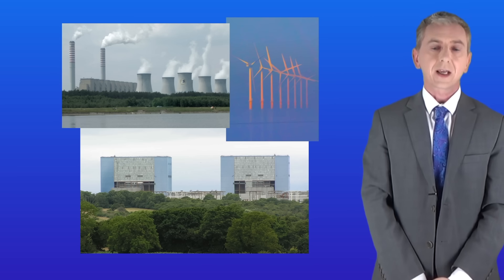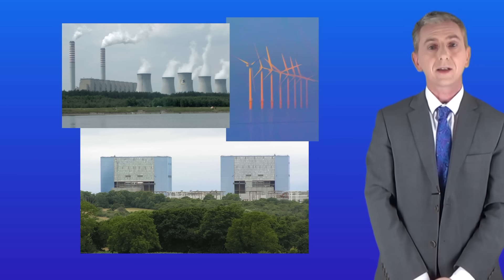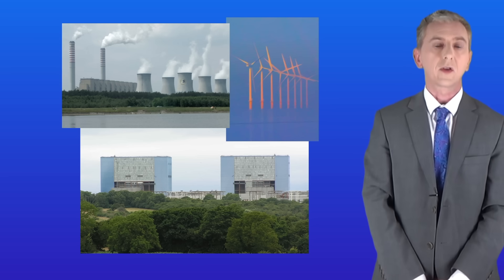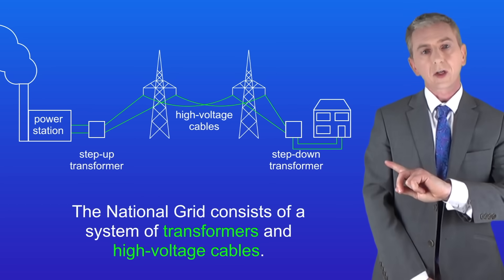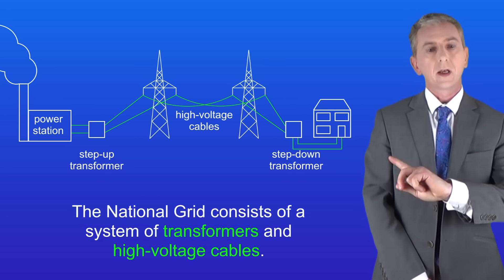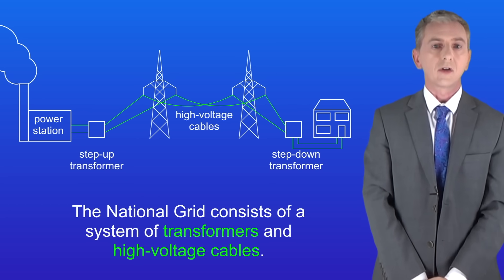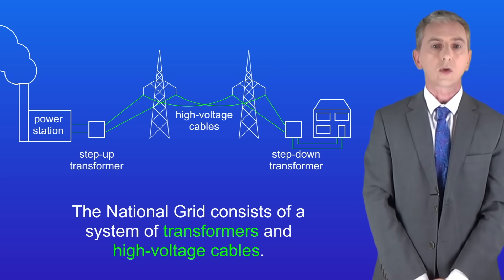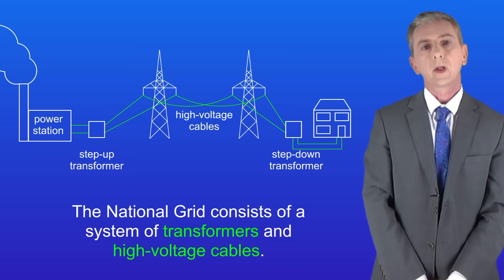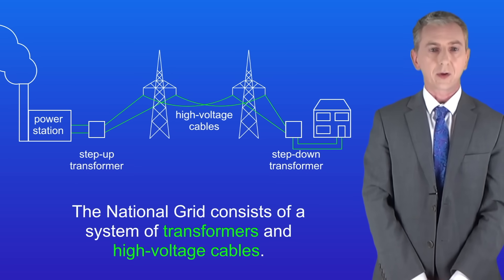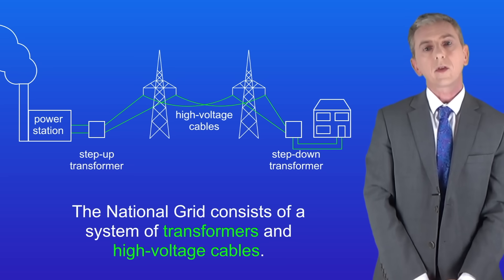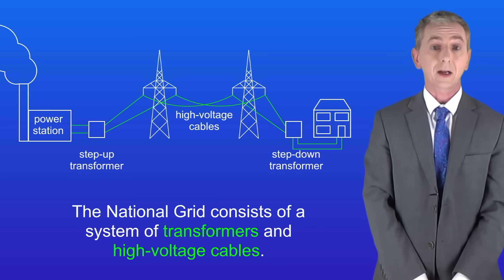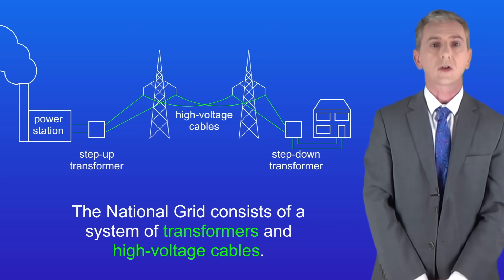The electricity has to get from the power stations to around 25 million homes in the UK, and that's done by the national grid. Here's a picture of the national grid — the key idea is that the national grid is a system of transformers and high voltage cables. The national grid connects the power stations to the homes, but remember that only the transformers and the cables are actually called the national grid.